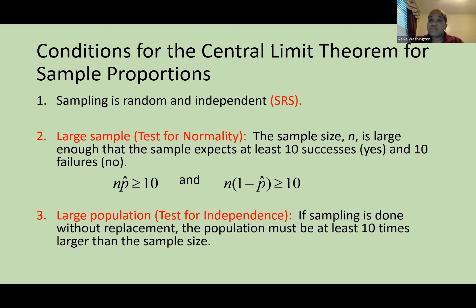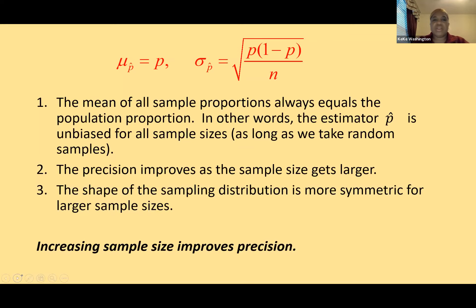To determine if it's a proportions question: if you see percentages or the survey question gives only two options — yes/no, true/false — it's proportions. If 10 out of 50 people said they support something, that's proportions because either you support it or you don't. Once conditions are met, you can draw conclusions.